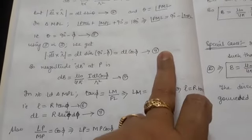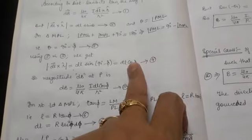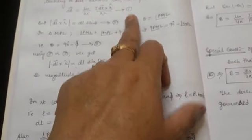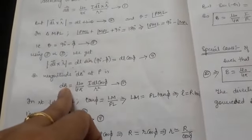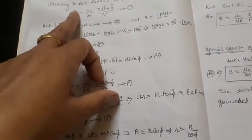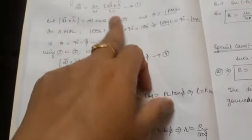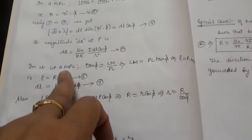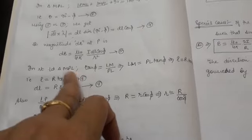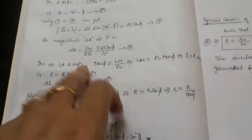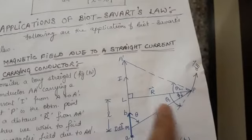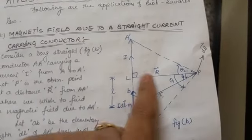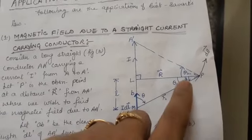Using this result, the magnitude of dB becomes equation number 5. Now taking the right-angled triangle MPL: in this triangle, phi is the angle, LM is the perpendicular (opposite side), MP is the hypotenuse, and PL is the base.